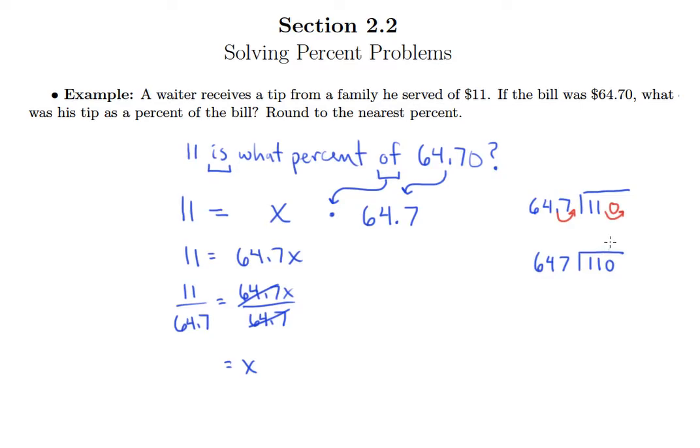So what we have here is 110 divided by 647. Of course, 647 does not go into 110. So we'll put a zero above the zero in 110. We'll add a decimal point, add a zero. And 647 goes into 1100 just one time.